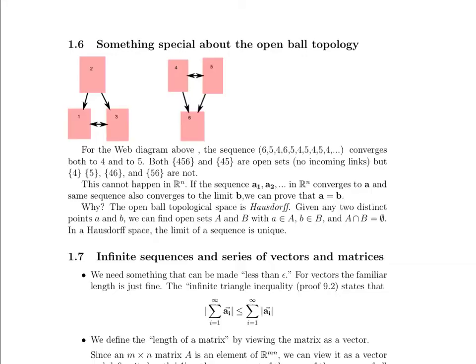Now, if we're looking at the Web diagram, note that the sequence 6-5-4, 6-5-4, 5-4-5-4 and continues repeating 5-4 forever, it converges to both 4 and to 5. There's no such thing as being within epsilon of 5 or 4, because there are only particular states. There's no half difference between 5 and 4. There's no 4 and a half, there's no 4.75. The only elements of this set are 4 and 5 and 4 and 5.